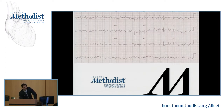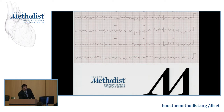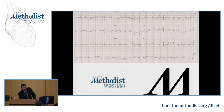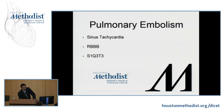Another cause of chest pain: here we have a patient who is tachycardic with a right bundle branch block — all trying to tell you there is a pulmonary embolism. Another sign is the S1Q3T3 pattern — very nonspecific, but it's there. So the three EKG findings you need to know for PE: tachycardia, right bundle branch block, and S1Q3T3.